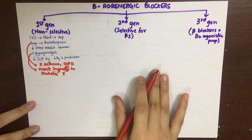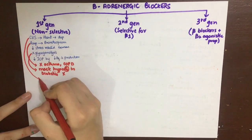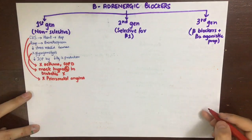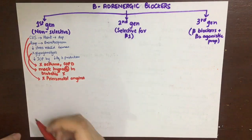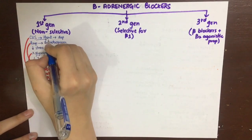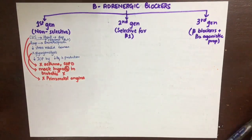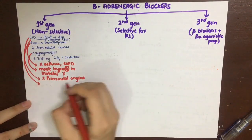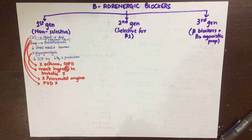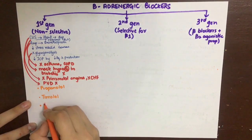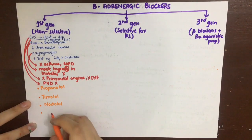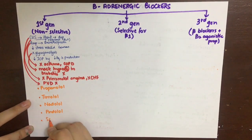First-generation beta blockers are also contraindicated in Prinzmetal angina due to beta-2 blockade causing vasospasm, in congestive cardiac failure because we need beta-1 activity for heart rate and contractility, and in peripheral vascular disease because they cause vasoconstriction by inhibiting beta-2 receptors. Main drugs in this class are propranolol, timolol, nadolol, pindolol, and sotalol.